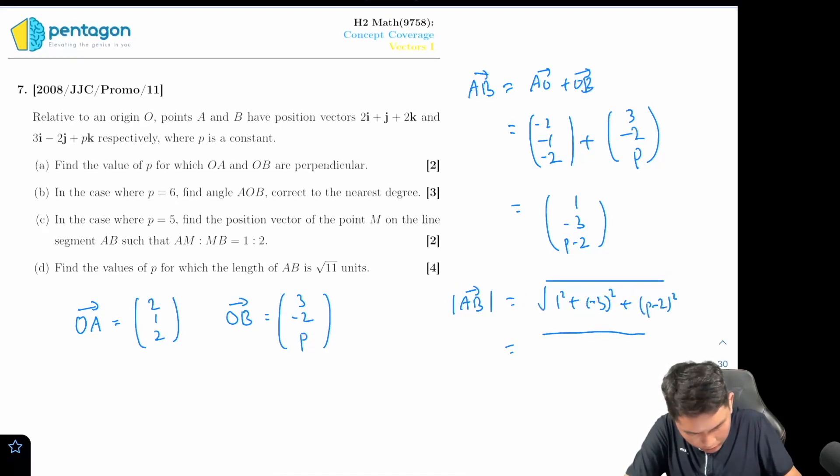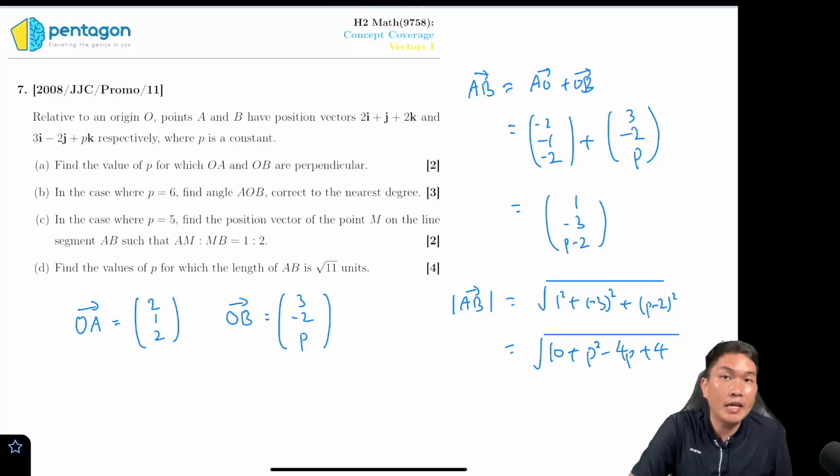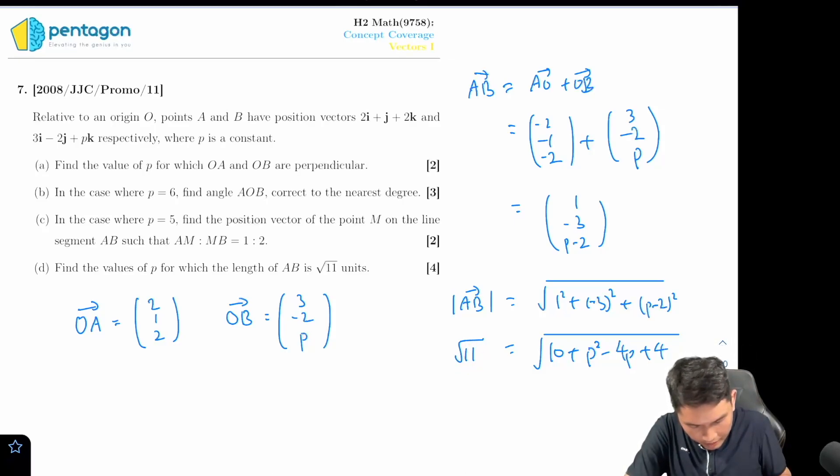This is going to be equals to one squared plus negative three squared plus p minus two squared. Now at the same time, I'm being told that AB has a magnitude of square root 11, so this is equal to square root 11, and I can compare what's inside the square root sign.